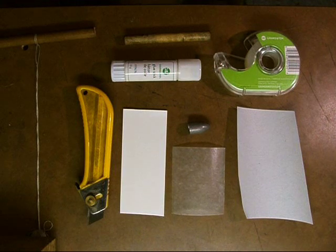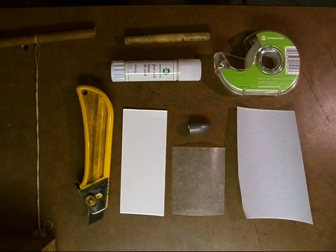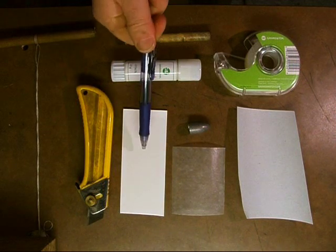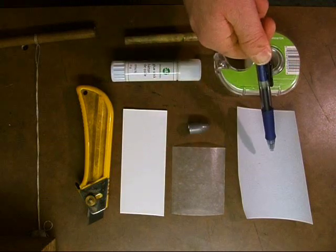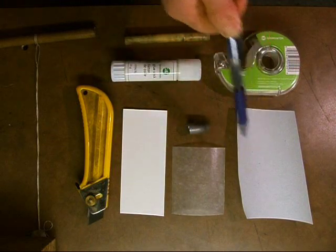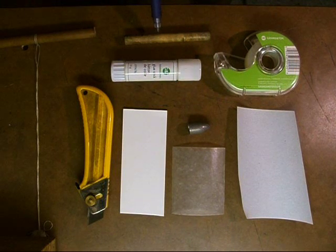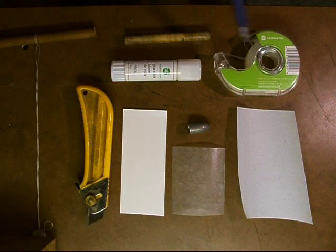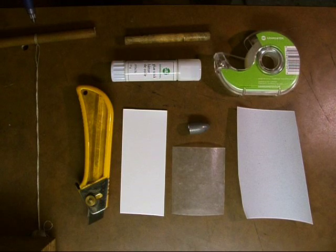Here we have all the parts assembled for the construction of an Enfield Rifle Musket Pritchett cartridge. We have the powder cylinder, the inner wrapper, the outer wrapper, the bullet, the mandrel, a sharp knife, a glue stick, some tape, and a string to choke the cartridge with.